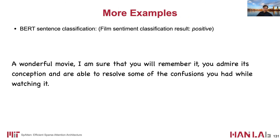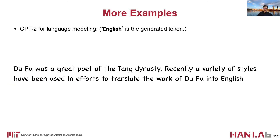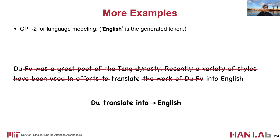Here we show several examples of token pruning. The task is film sentiment classification with BERT. After one round of token pruning, many unimportant tokens are removed such as 'I', 'm', 'the', 'some'. After another round of pruning, more tokens are removed and the remaining ones include 'sure', 'remember', 'admire', 'resolve', 'confusions' — it is still obvious that the sentiment is positive. Another example is language modeling with GPT-2. The first round removes redundant tokens, and after the second round, the remaining tokens are 'do', 'translate', 'into', so the model can still generate a reasonable next token: 'English'.